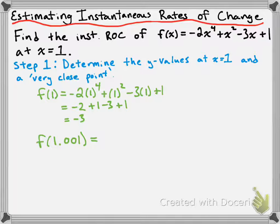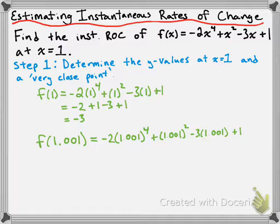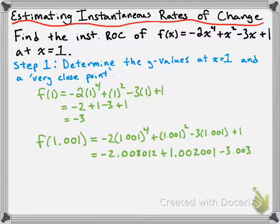So substituting that value in, we get -2 times 1.001 to the power of 4, plus 1.001 to the power of 2, minus 3 times 1.001, plus 1. Cleaning this up, we get -2.008012 + 1.002001 - 3.003 + 1, and putting these together we get -3.009011.